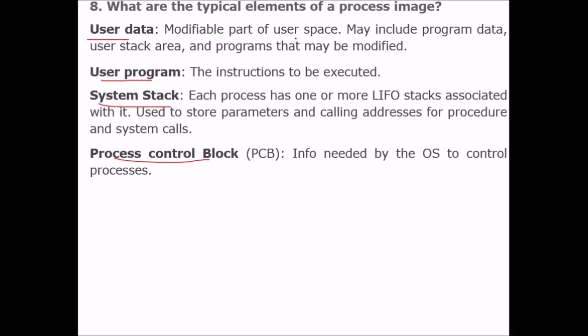User data is the modifiable part of user space, including program data, user stack area, and programs that may be modified. User program contains the instructions to be executed. The system stack stores parameters and calling addresses for procedures and system calls. Finally, the process control block contains information needed by the OS to control the processes.